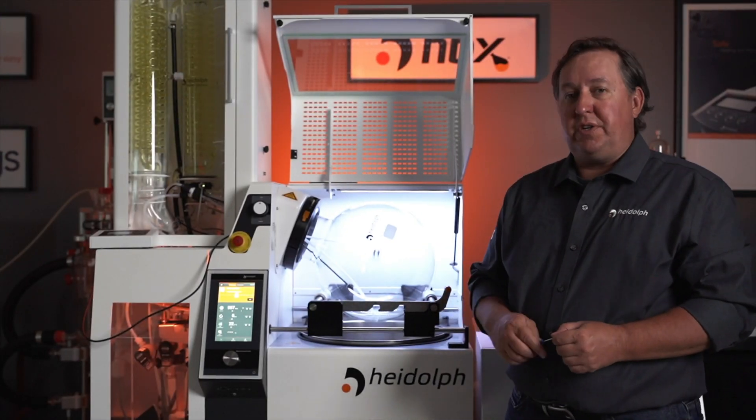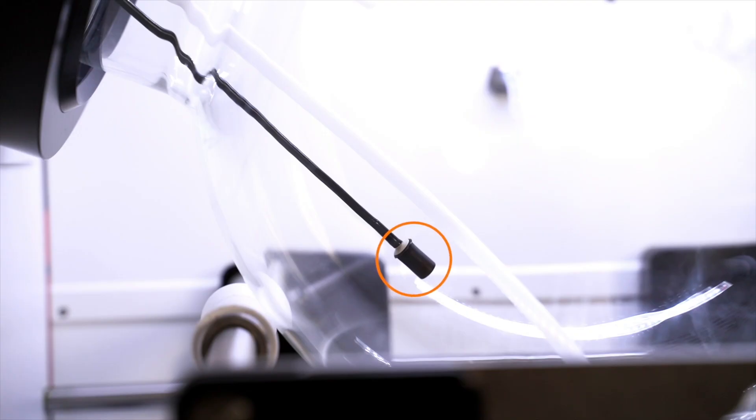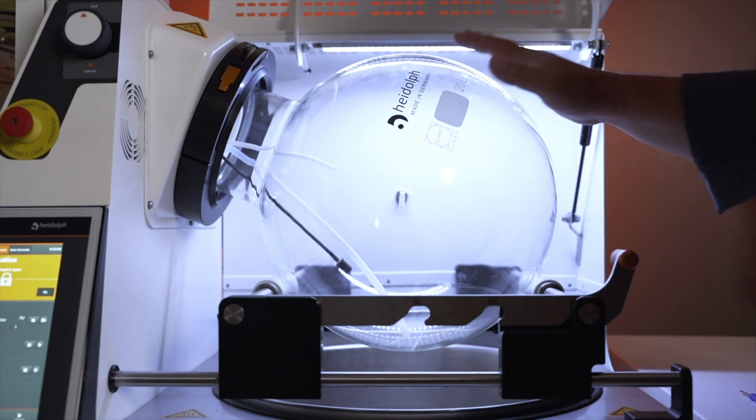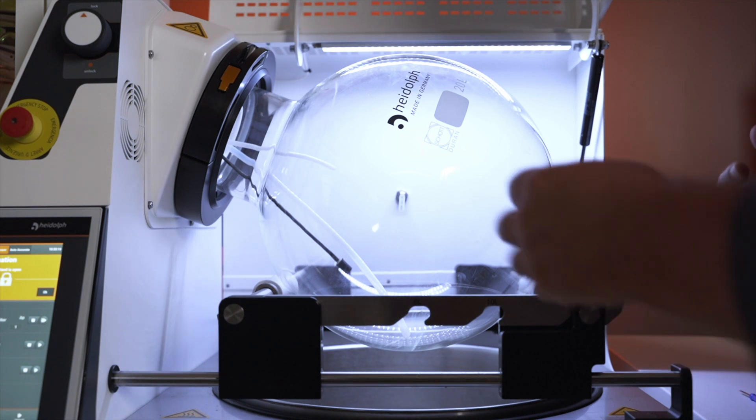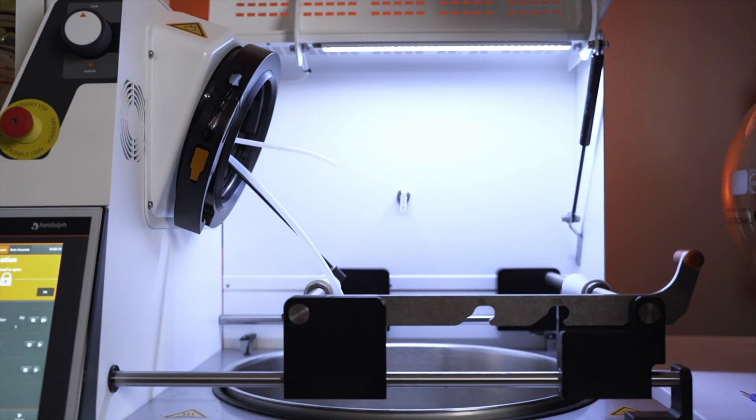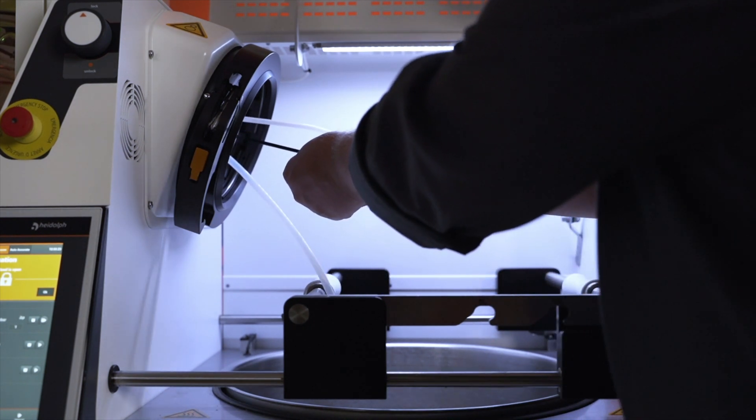Okay so next I'm going to show you how to adjust the sensitivity of your product level sensor inside the evaporation flask. Every time you do remove the flask I do recommend calibrating the sensitivity of your product fill sensor that's inside the evaporation flask. In order to do that with your flask off you do want to make sure that you clean the sensor of any potential debris.